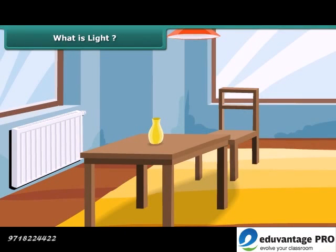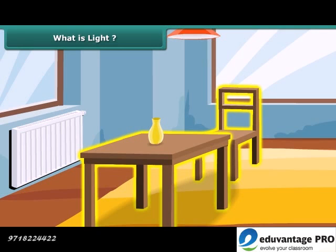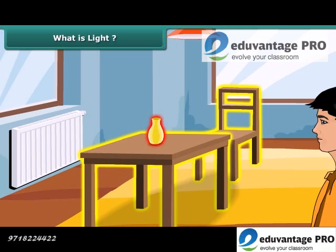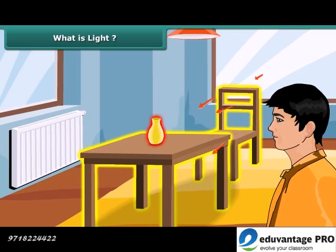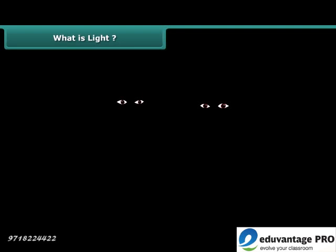You look at different things in this room — you can see the chair, table, and the beautiful vase on the table. Things are visible to us only when the light from the object enters our eyes. This occurs in two ways: either the object itself emits light, or it reflects the light falling on it from another light source. Hence, in complete darkness, due to the absence of light, we cannot see anything.